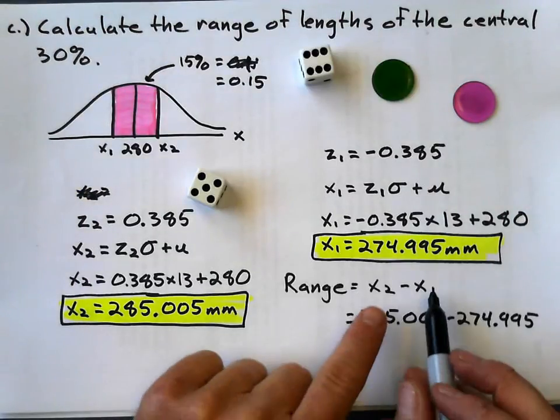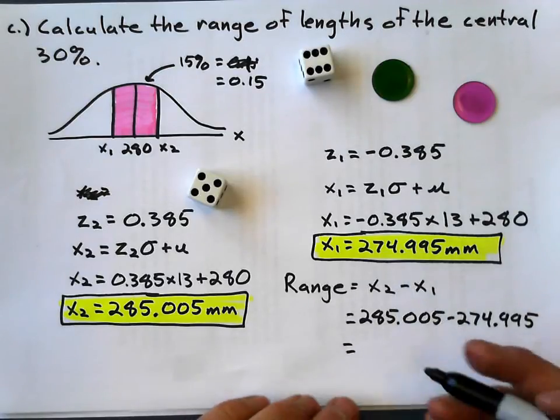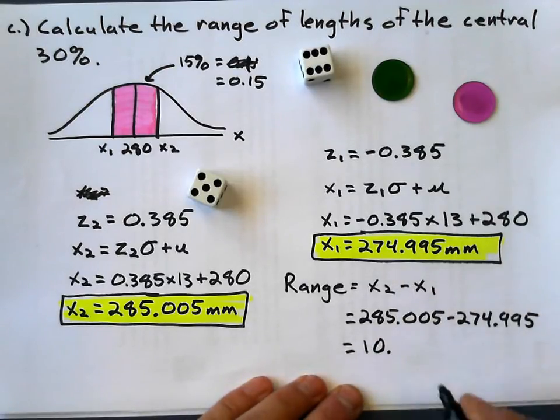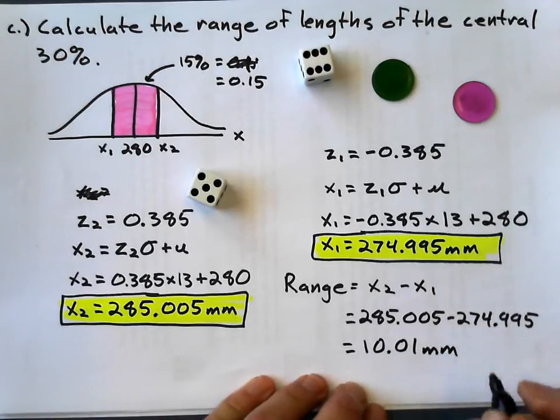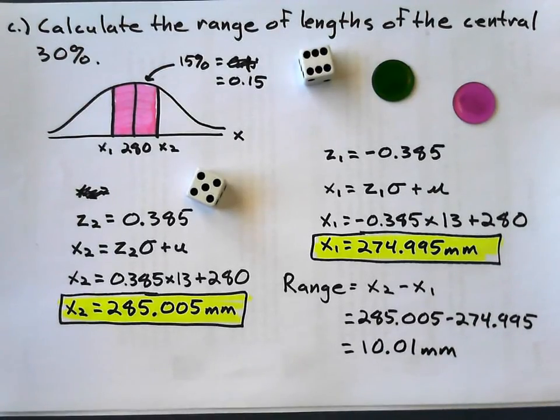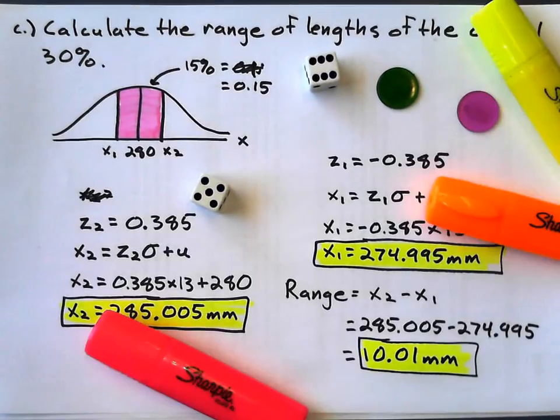Now, I just find their difference. Of course, the range is X2 minus X1, these values, which I just solved for here, and I think my range comes out to be about 10 millimeters. 10.01 millimeters. Well, there are some examples of inverse normal. I hope that helped.